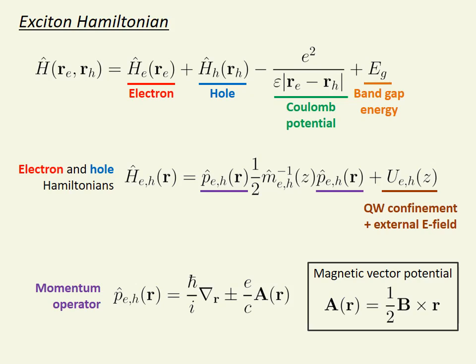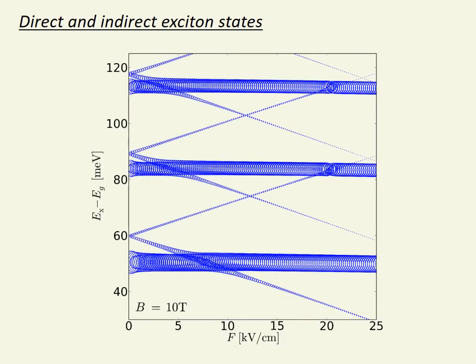In the paper, we describe a precise numerical solution of the exciton-Schrodinger equation by expanding the wave function into the basis of Coulomb uncorrelated electron-hole pair states. We model the exciton's internal structure and its dependence on electric and magnetic fields. We calculate the transition energy of each state.